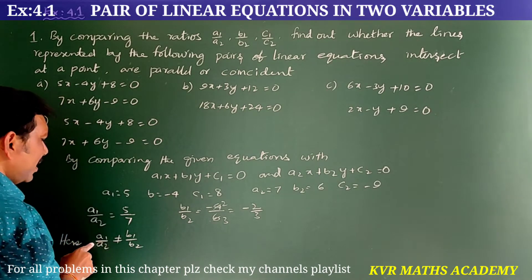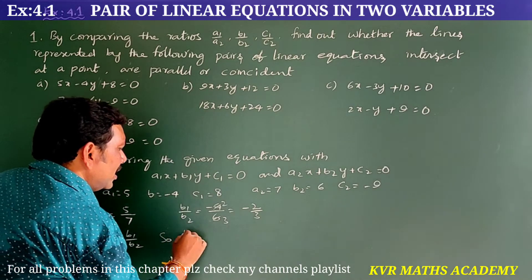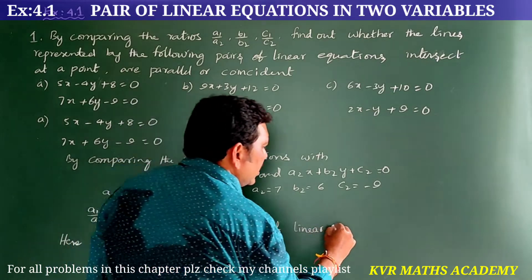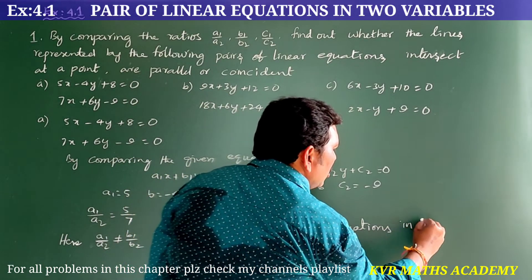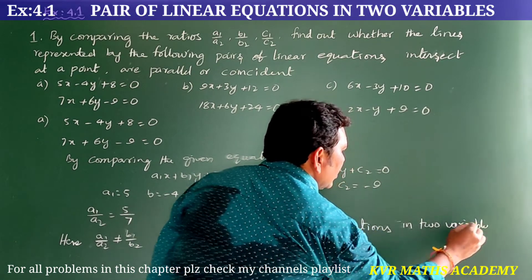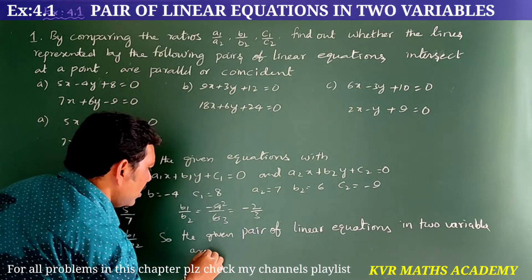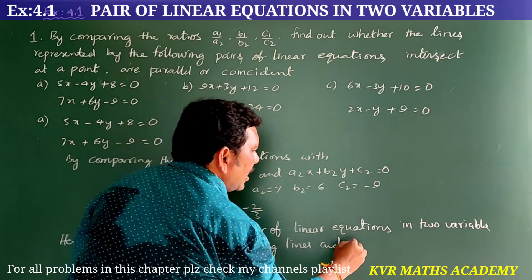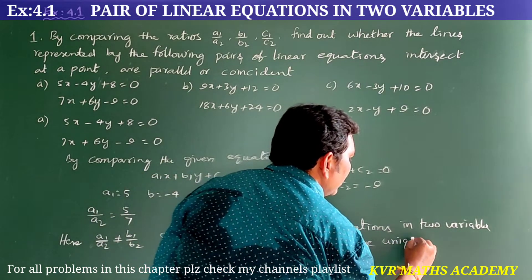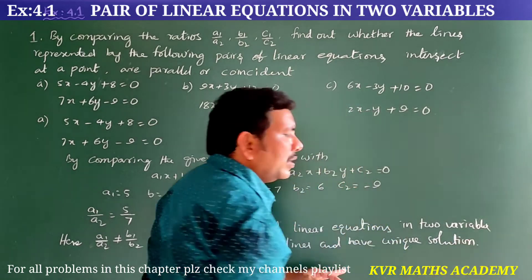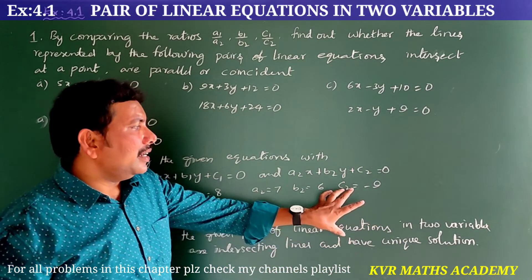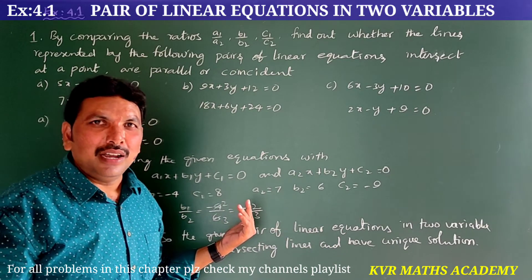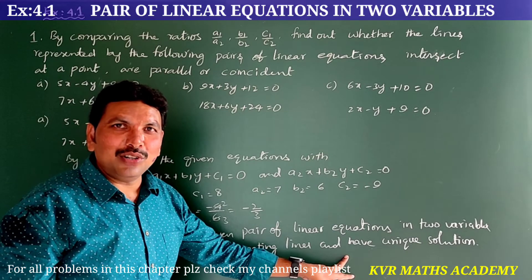Since A1 by A2 is not equal to B1 by B2, the given pair of linear equations in two variables are intersecting lines and have a unique solution. In exams, this is a two-mark sum. If you write it completely like this, you will get 2 out of 2. You should also write the conclusion clearly.